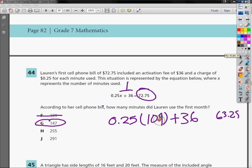And in this case I plug in 147. So I do 0.25 parenthesis 147 plus 36, it will give me 72.75.